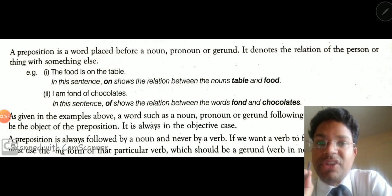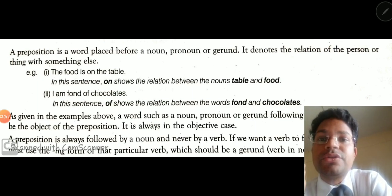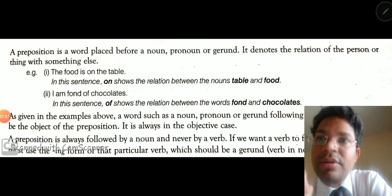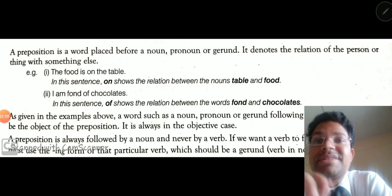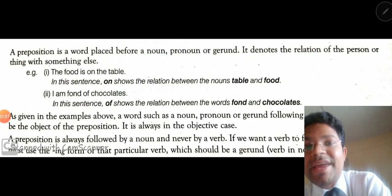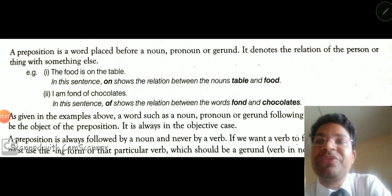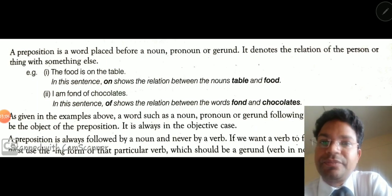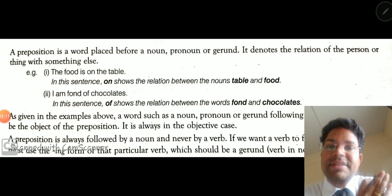So what is the meaning? Number one: 'pre' means before, so preposition is placed before a noun, pronoun, or gerund. It shows the relation between the subject and the other words. Now let's see an example: 'The food is on the table.' Here, 'the food' is the subject and 'the table' is the object of the sentence.